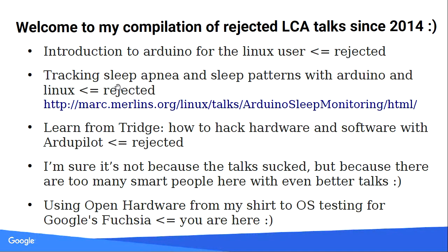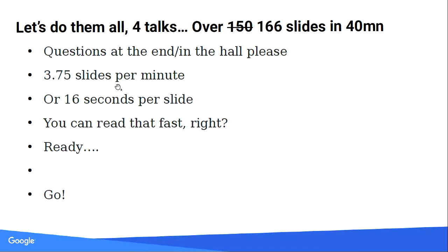I'm sure it's not because I'm a bad person or not smart. It's because the rest of you were smarter than me and actually got the talk slots. I'm not taking it personally. Now you're here for the one about how to do open hardware hacking — from this shirt with blinky LEDs to Google Shush. We have four talks, 166 slides in 40 minutes. That's 3.75 slides per minute, or 16 seconds per slide.